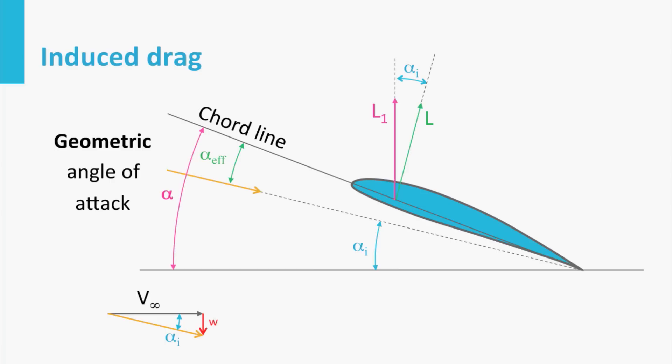As a result, a lift vector L points in another direction, since it is now perpendicular to the incoming flow vector, which makes an angle alpha effective relative to the chord line. If we take a look at this lift vector, we see that it has a component in the direction of the free stream velocity.